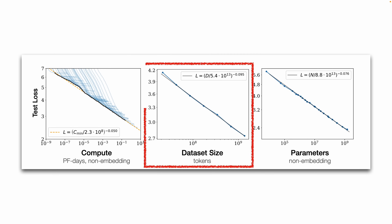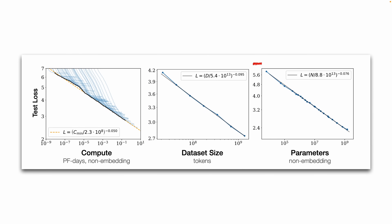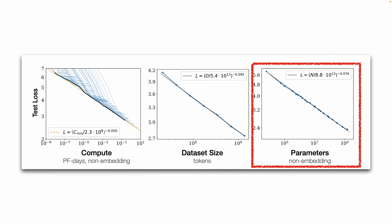For data, we hit a wall — we've basically scraped the entirety of the internet. But distillation helps overcome this limitation by enabling powerful LLMs to generate more data. And for parameters, one big bottleneck is inference latency, because bigger models are slower at generating outputs. Distillation decouples training from inference: we can use a giant model during training, but end up with a smaller, faster model for deployment.